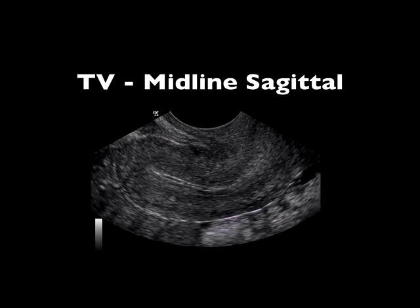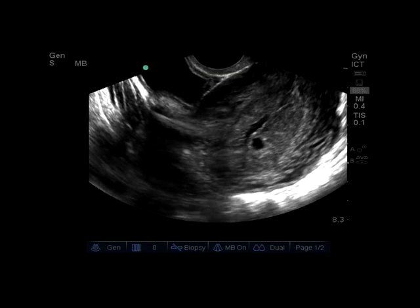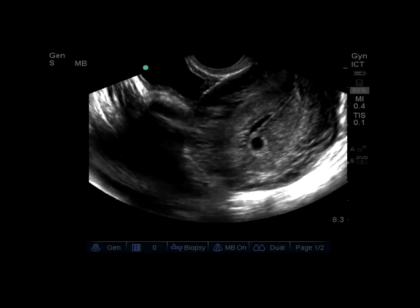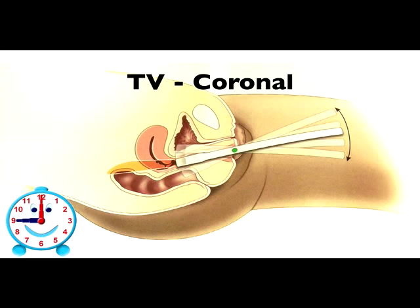Also notice the hyperechoic endometrial stripe which bisects the uterus. In this video we can see the bladder on the left side of the screen, so we know that is the anterior aspect of the patient. On the right side we can see the uterus. For the next part of the examination we'll be doing the coronal view of the transvaginal examination. We're going to rotate the probe with the probe marker to the patient's right, which from your view should be at the nine o'clock position.